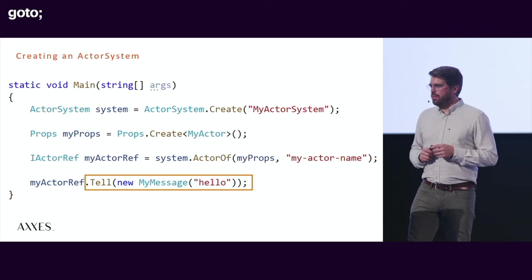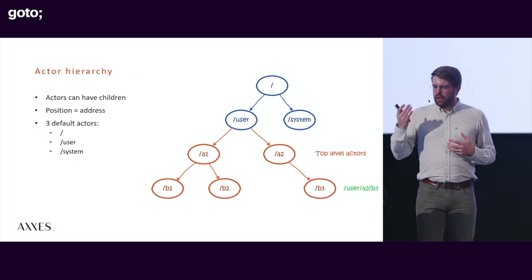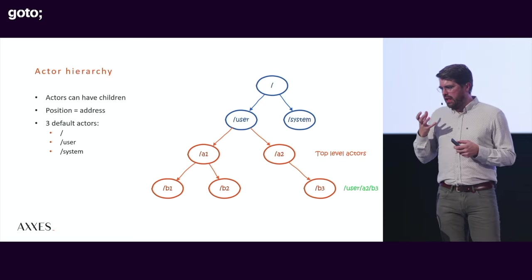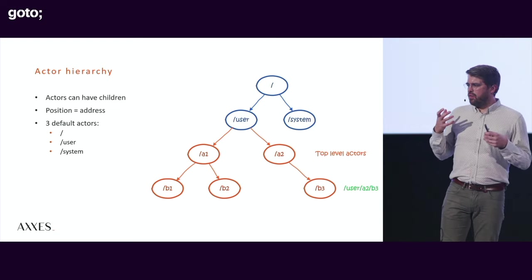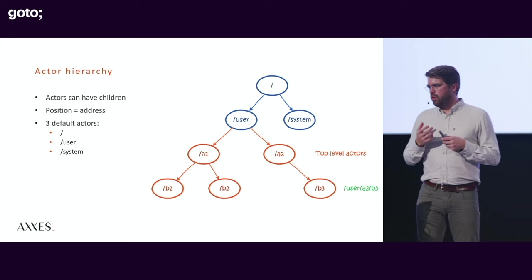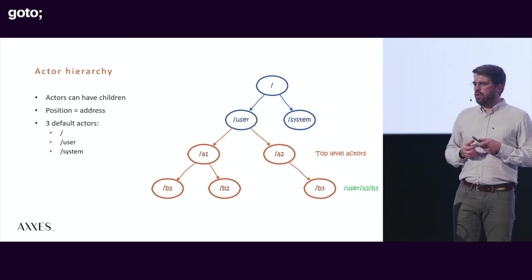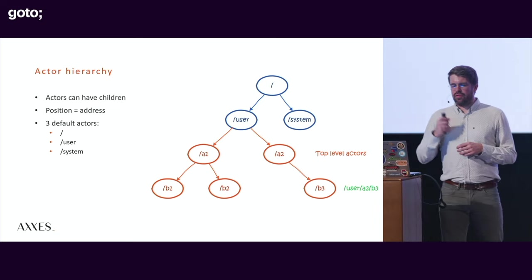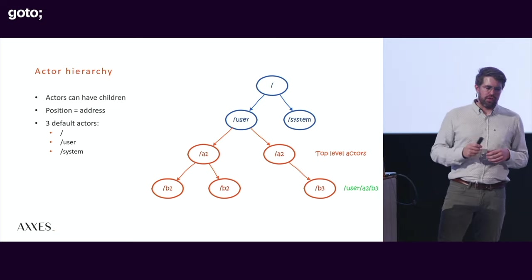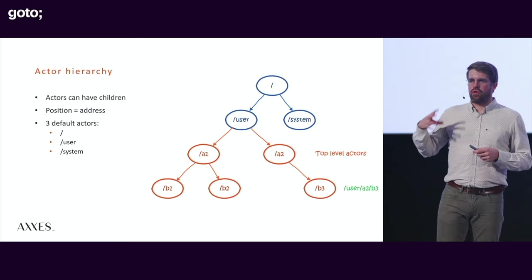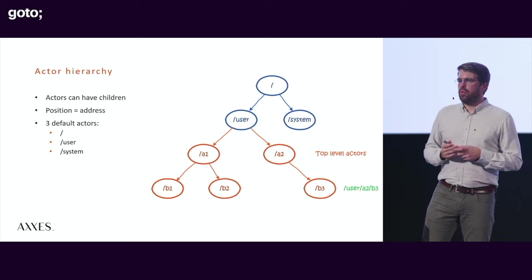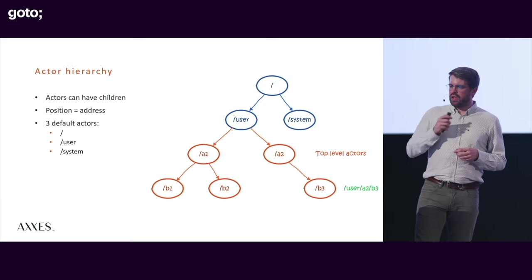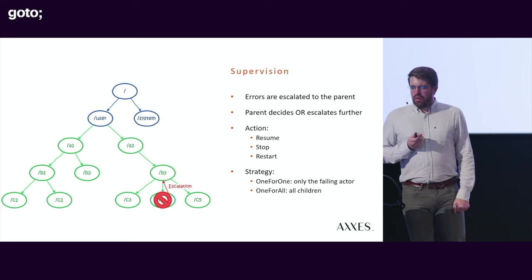Actors live in a hierarchy. Your position in the hierarchy is defined by your place in it — actors can have child actors, grandchildren, and so on. Everything you create falls under the user actor, which is user space. There are three default actors always present: the root, the user, and the system actor. Under the system actor, all the thread schedulers run; under the user actor are the functional ones we build ourselves. The actor's address in this hierarchy is important, as we'll see shortly.